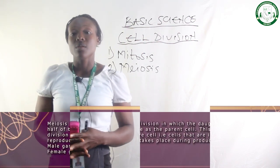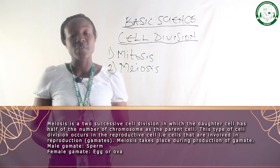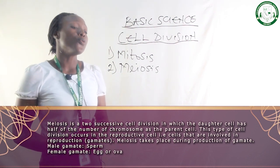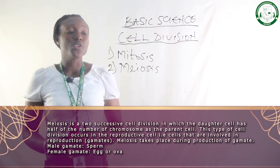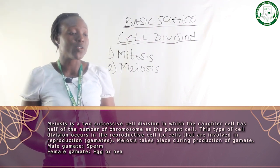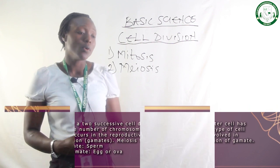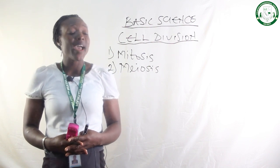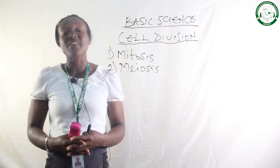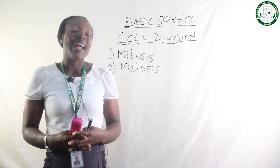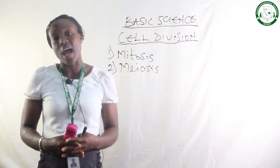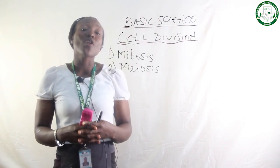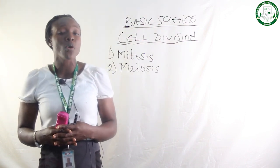Meiosis is the second type of cell division. Meiosis is the type of cell division that occurs in reproductive cells — for example, ovum or sperm cells. Meiosis is a type of cell division in which the division occurs twice, and at the end of the division, four daughter cells are produced. The four daughter cells do not have the same number of chromosomes as the parent cell.